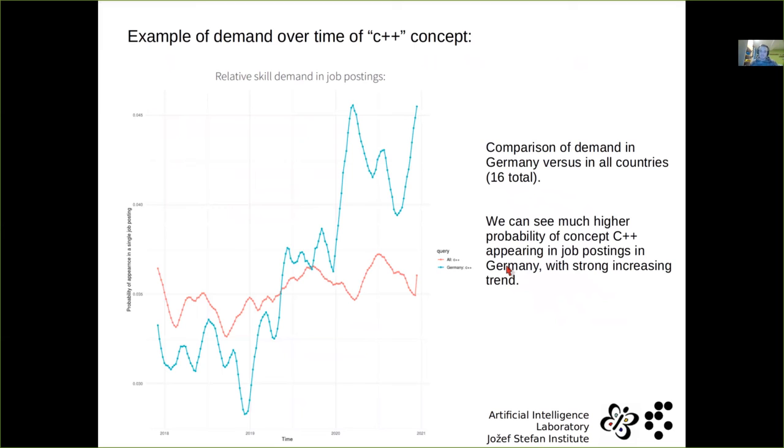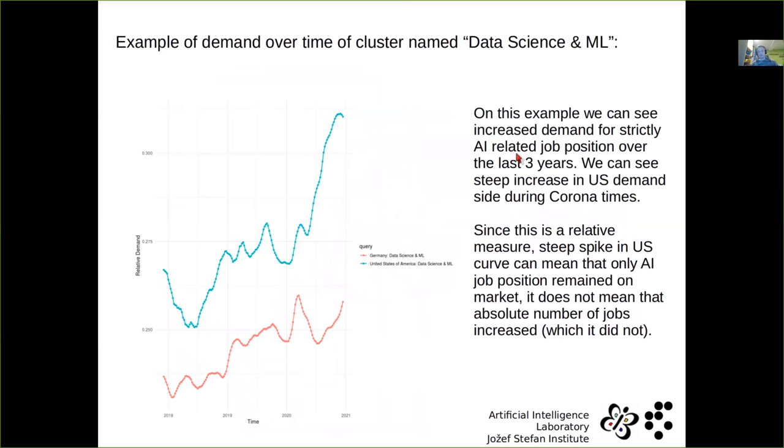So the results, you can map concepts like C++, we can see that it increased drastically in Germany over time, or you can look at all countries, or you can model whole clusters, like we can name this data science and ML, which is basically artificial intelligence cluster, and we observe how job postings behaved over time, compared to this cluster. So we can see that, for example, United States of America during the corona times, this cluster gained a lot of importance. So this is relative demand. This means either absolute number increased and also AI increased, or absolute number decreased and AI stayed the same, something like this. But we can measure the same. So these are our results.